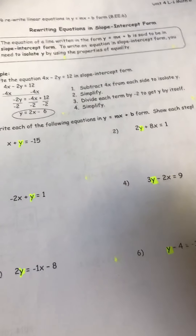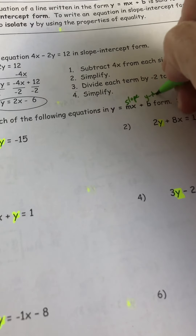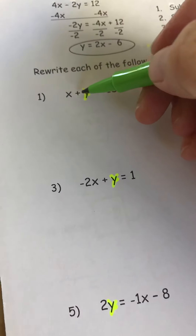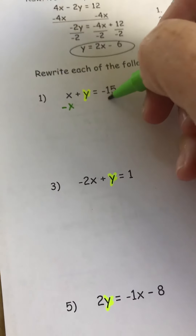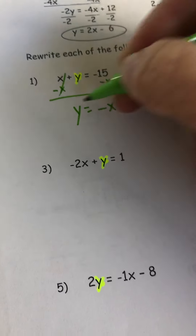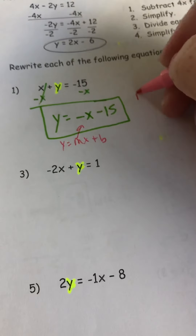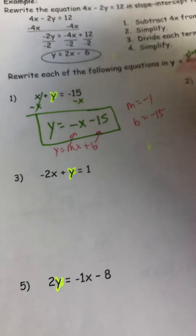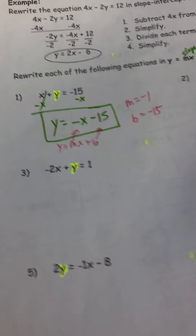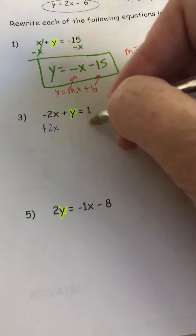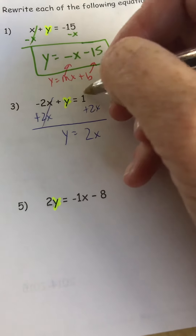The next two pages are about solving for y — rewriting in y equals mx plus b form, where m is our slope and b is our y-intercept. For number 1, I've got y with a positive x, so subtract x from both sides. y equals negative x minus 15. The slope is negative 1 and the y-intercept is negative 15. For number 3, I've got negative 2x — to get rid of it, add 2x — so y equals 2x plus 1.